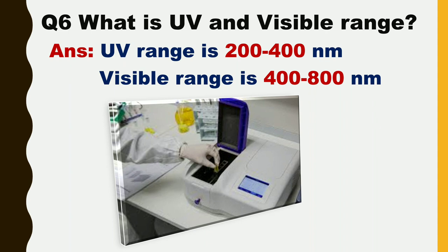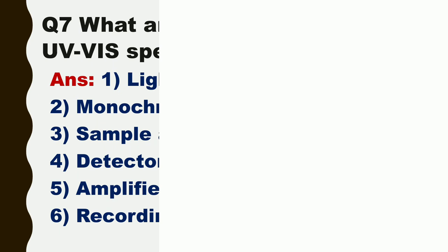Next question is: what is the UV and visible range? The answer is, UV range is 200 to 400 nanometers and visible range is 400 to 800 nanometers.